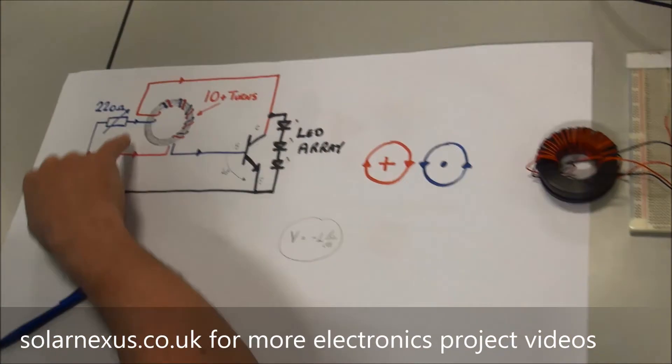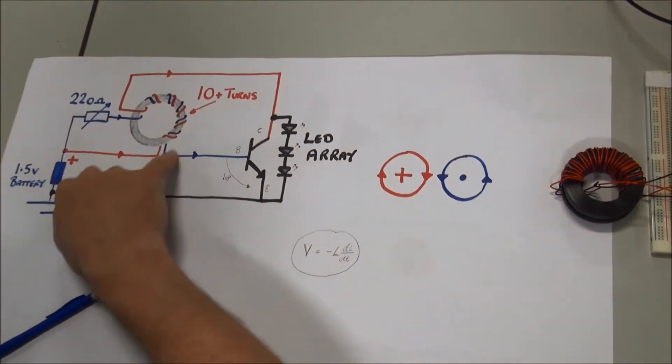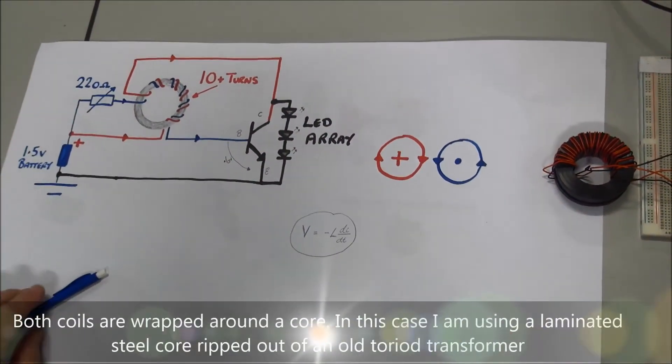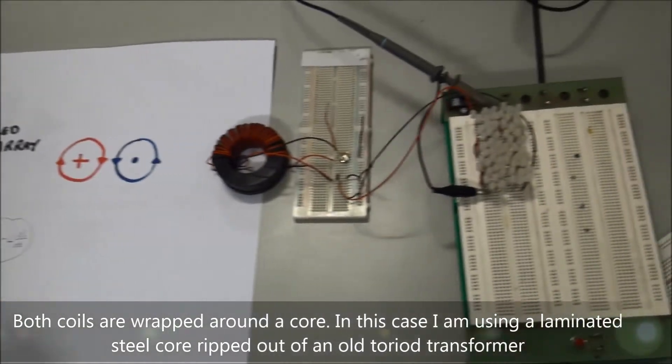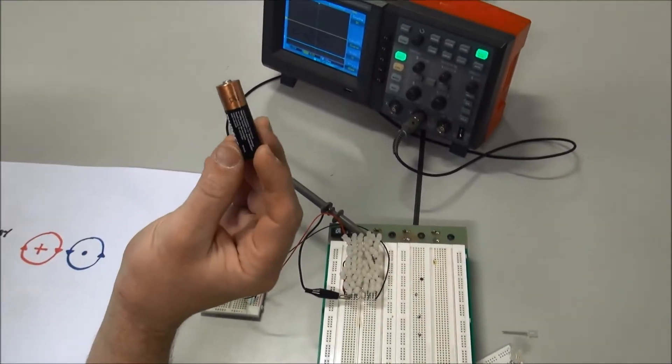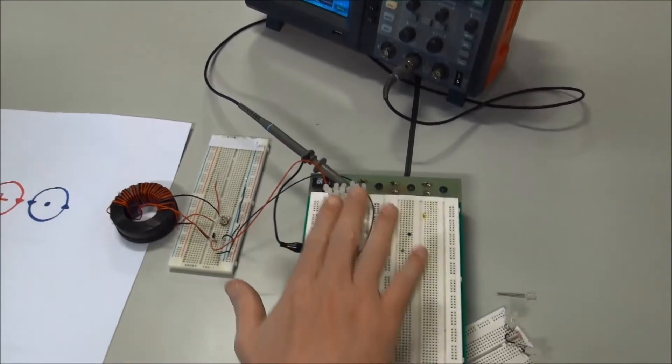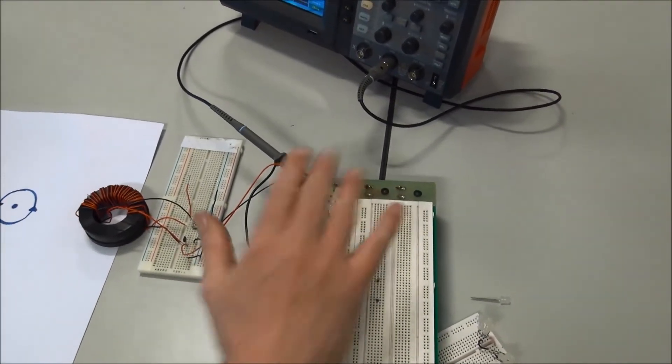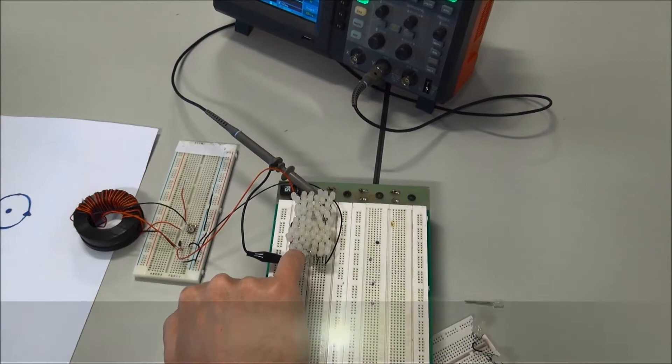Just to see what it does, the dual thief circuit uses a 1.5 volt battery here, and we can use that to light an array of LEDs. Each of these LEDs has a switch-on voltage of 3 volts, so if you were to put an LED across this battery it wouldn't light, but when you use it in this circuit you will see that...